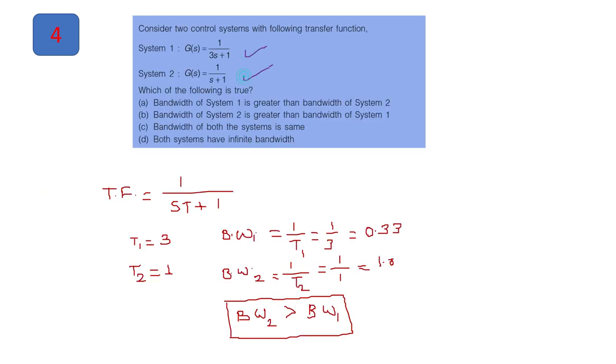Next question, there are two control systems which are given by their transfer function. We have to identify that the bandwidth is 1 and 2 in comparison. So transfer function is 1 upon ST plus 1. So this is your first order system. And if we compare here, the system of S multiplied is your T. So from the first case, if we find out here, first T1 will be 3 seconds, T2 will be 1. And bandwidth is inversely proportional to this time. So it will be in the first case 0.3. And in the second case, the system of bandwidth is 1. So second system of bandwidth is greater than the bandwidth of the first system. So option B is correct for this question.